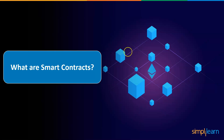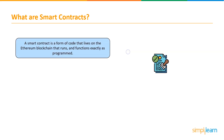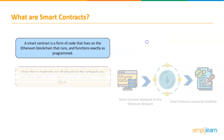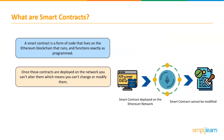What are smart contracts? A smart contract is a form of code that lives on the Ethereum blockchain that runs and functions exactly as programmed, quite similar to normal contracts. Once these contracts are deployed on the network, you can't alter them, which means you can't change or modify them.